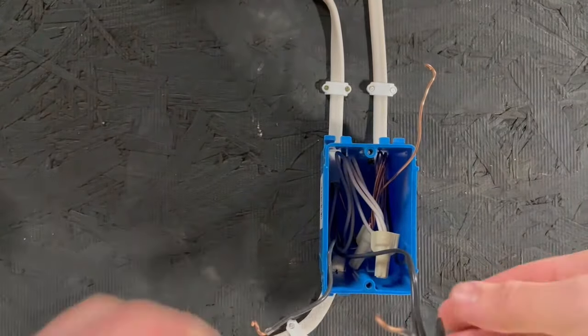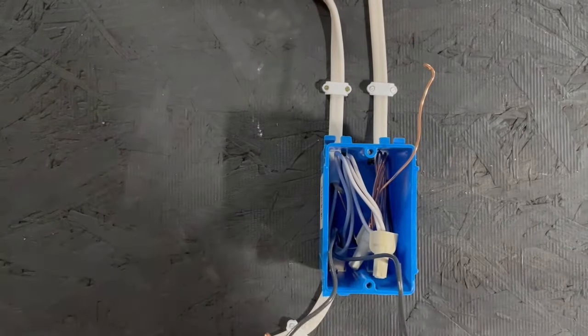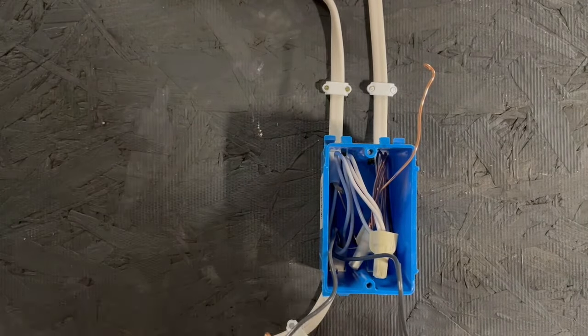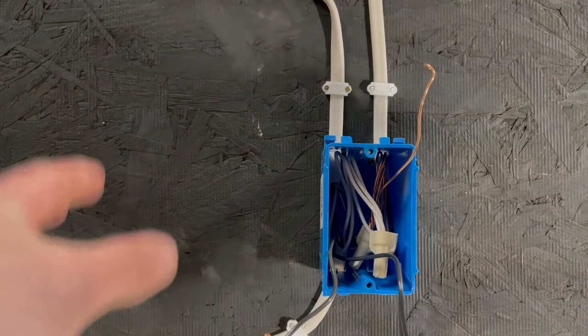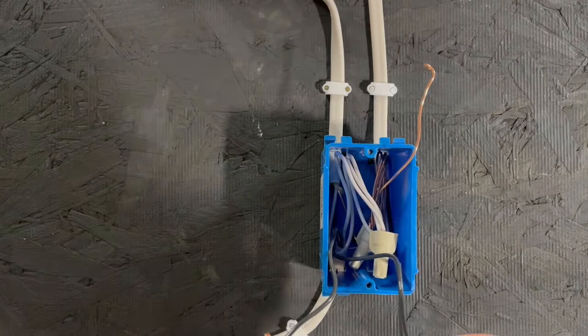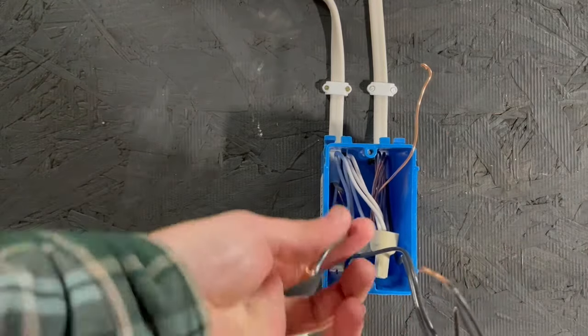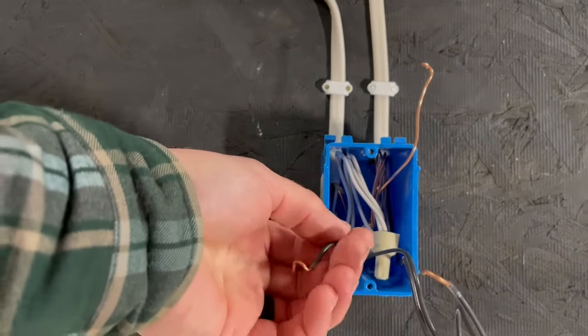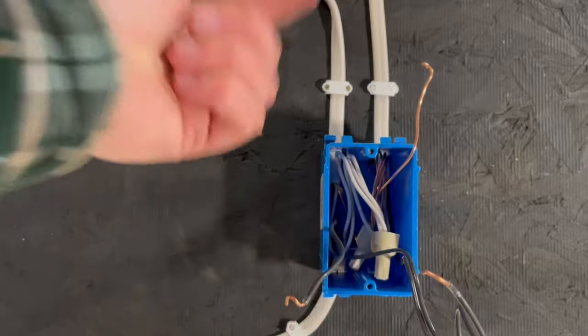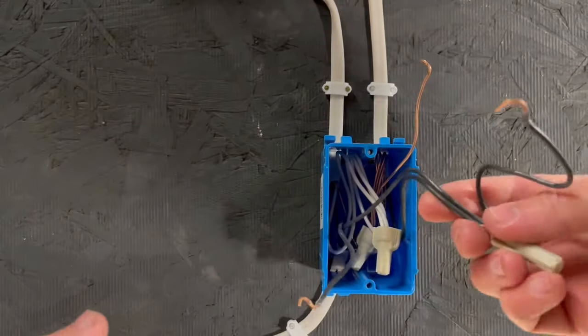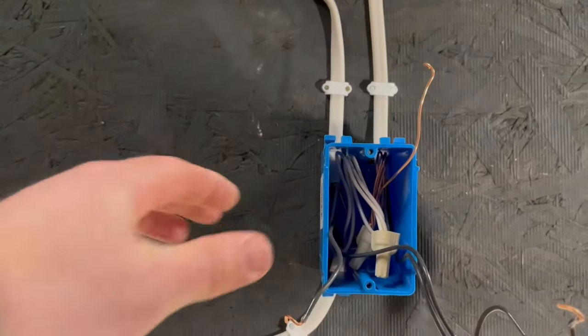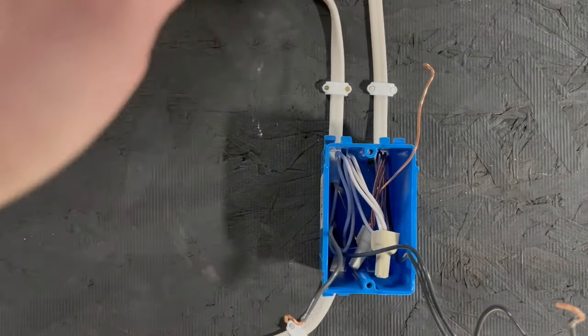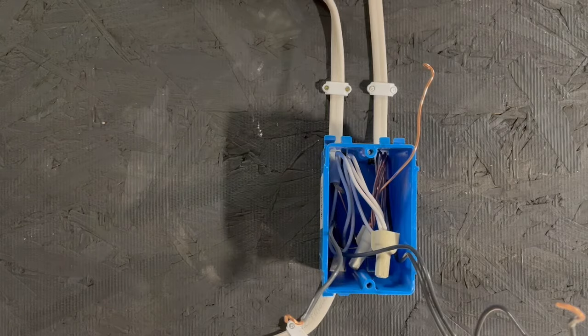So now we have our blacks, our hots and our switch legs. So if you're looking into your box and you're not really sure what goes to what, like say this one has a few wires under it and it's wire nutted and it has a wire coming out, and this one has two and one wire coming out. So first things first, let's find our hot and go from there.